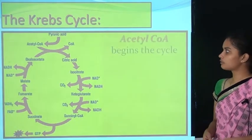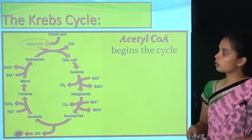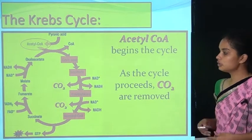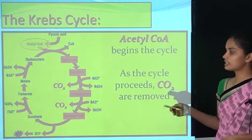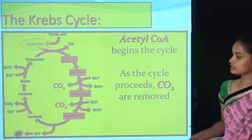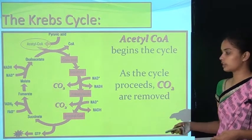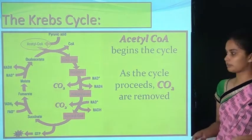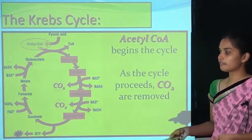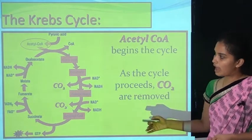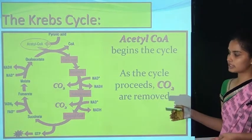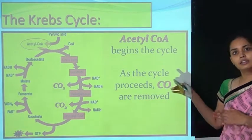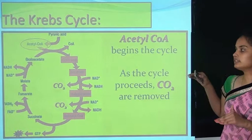In the Krebs cycle, acetyl-CoA is converted to citric acid, then to isocitrate, then to ketoglutarate — releasing CO2 and converting NAD to NADH. Ketoglutarate is converted to succinyl-CoA, again releasing CO2 and producing NADH. Succinyl-CoA is converted to succinate, generating GTP which is converted to ATP. Succinate is converted to fumarate, with FAD converted to FADH2. Fumarate is converted to malate, and malate back to oxaloacetate, producing NADH. CO2 is released and the 6-carbon citric acid is reduced to a 4-carbon compound.